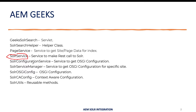SolarConfigurationService is the service that fetches your OSGI configuration. Because this is a factory configuration, I'll be using SolarServiceManager — a service used to get a specific OSGI configuration based on the site ID. How you get that factory configuration is already covered in detailed tutorials on this channel. SolarOSGIConfig is the OSGI configuration containing some fields which I'll show you. SolarCAConfig is a context-aware configuration containing the site ID and collection ID. SolarUtil contains the utility methods I'll be using throughout this project.